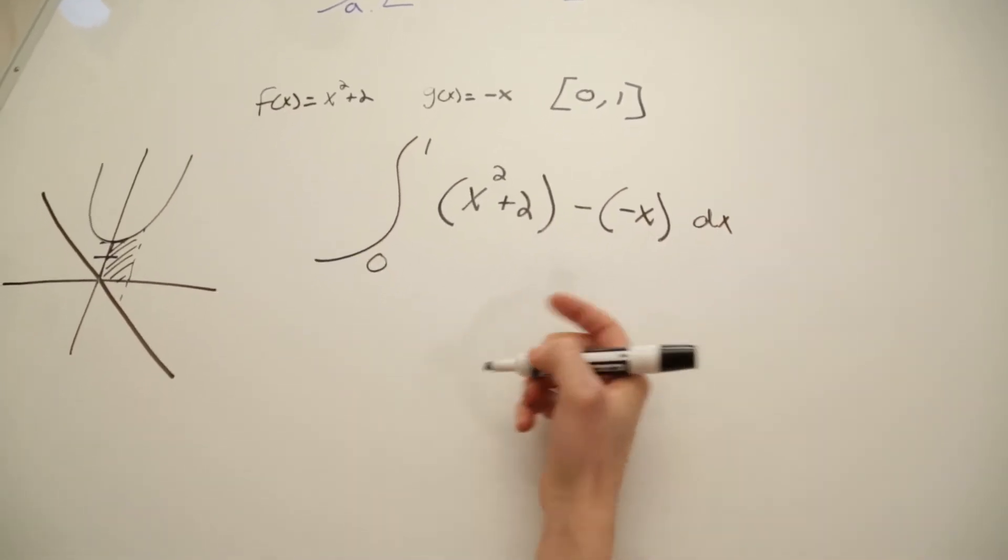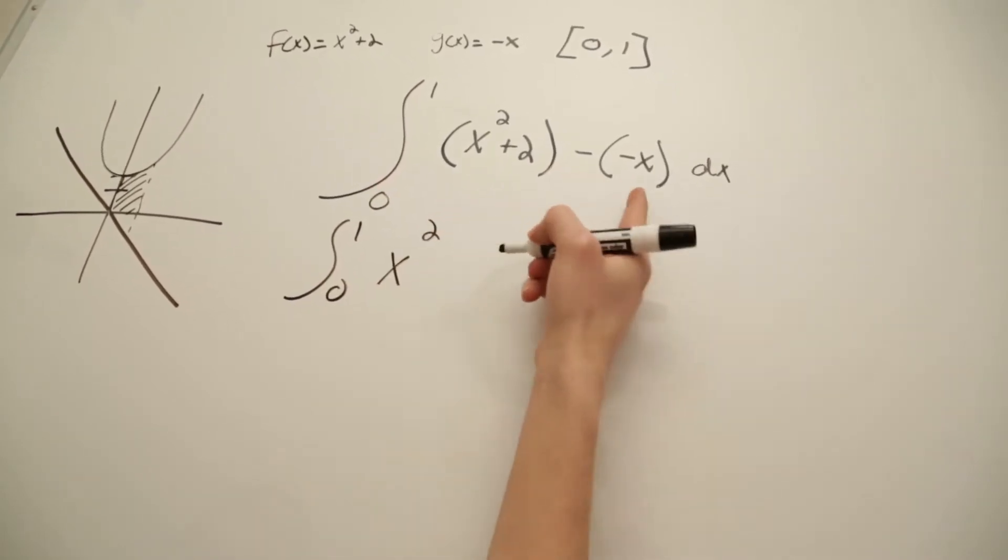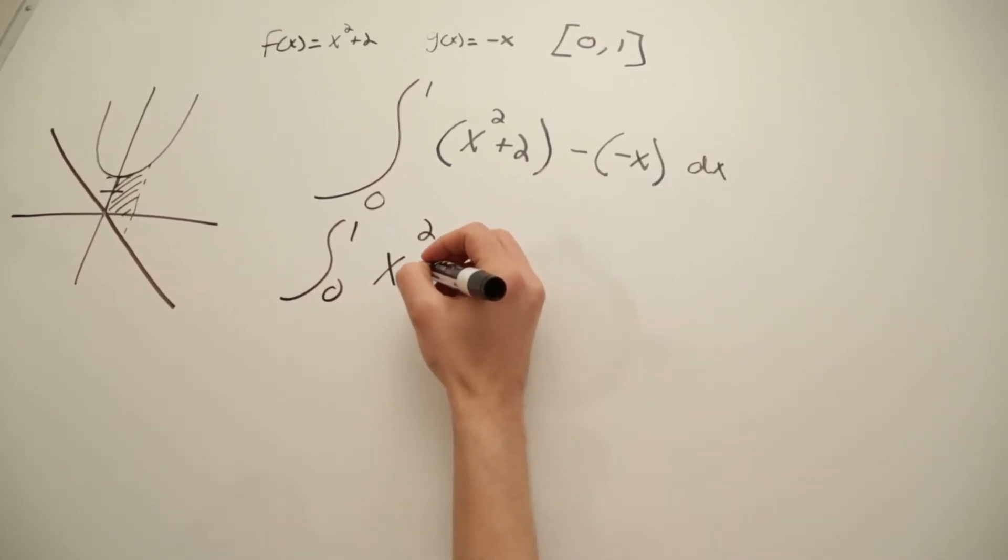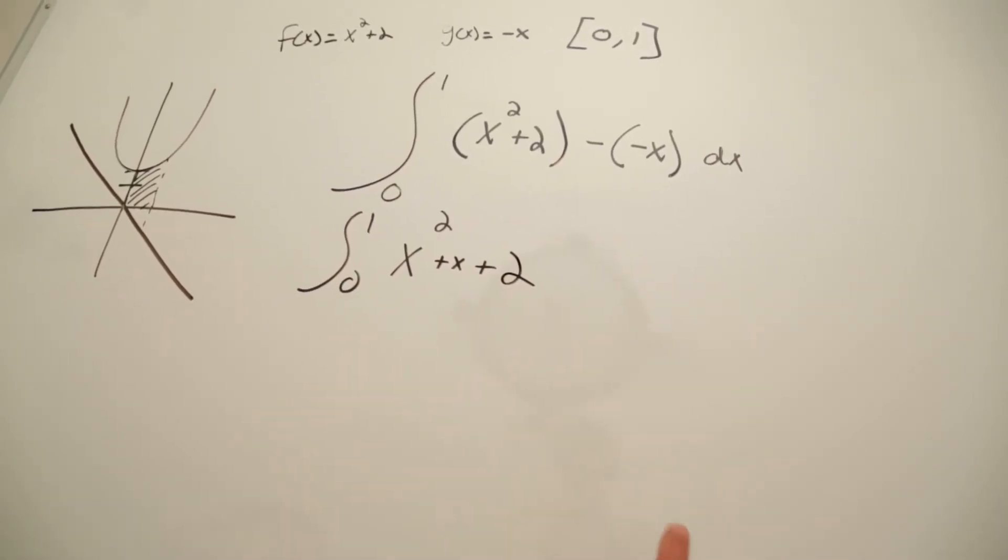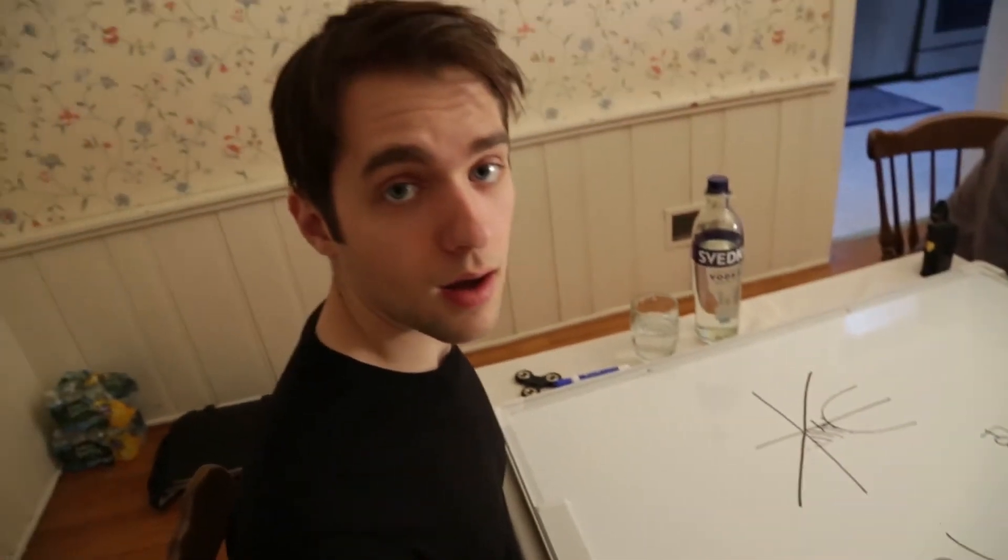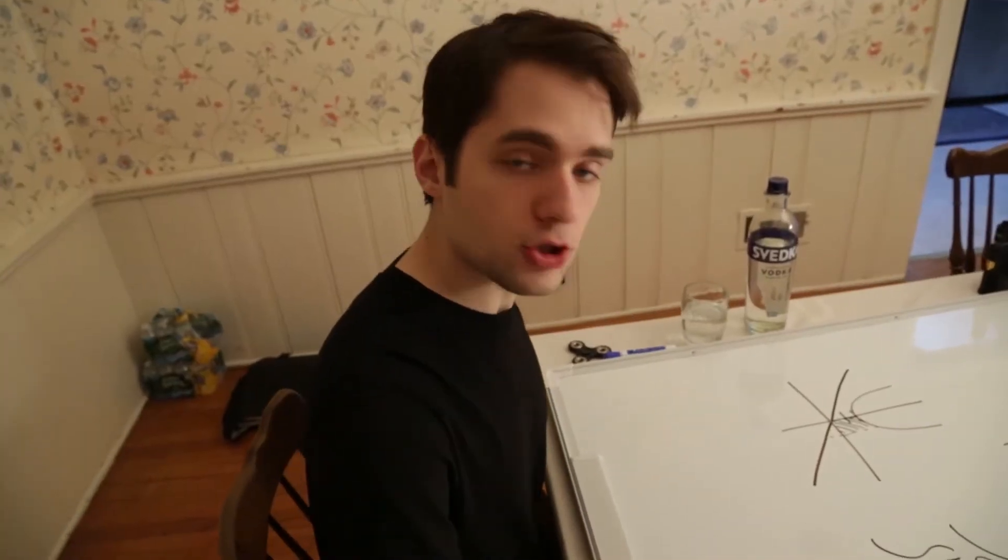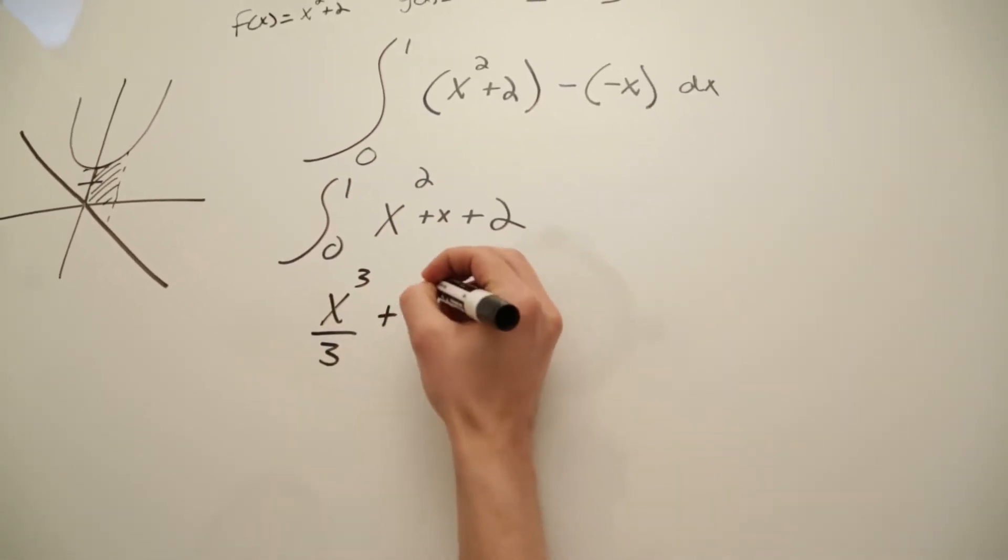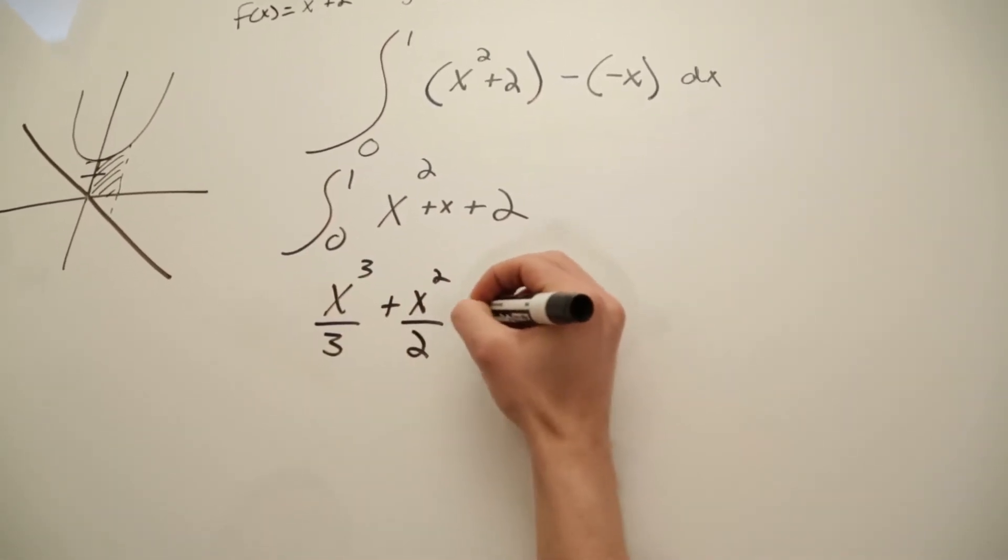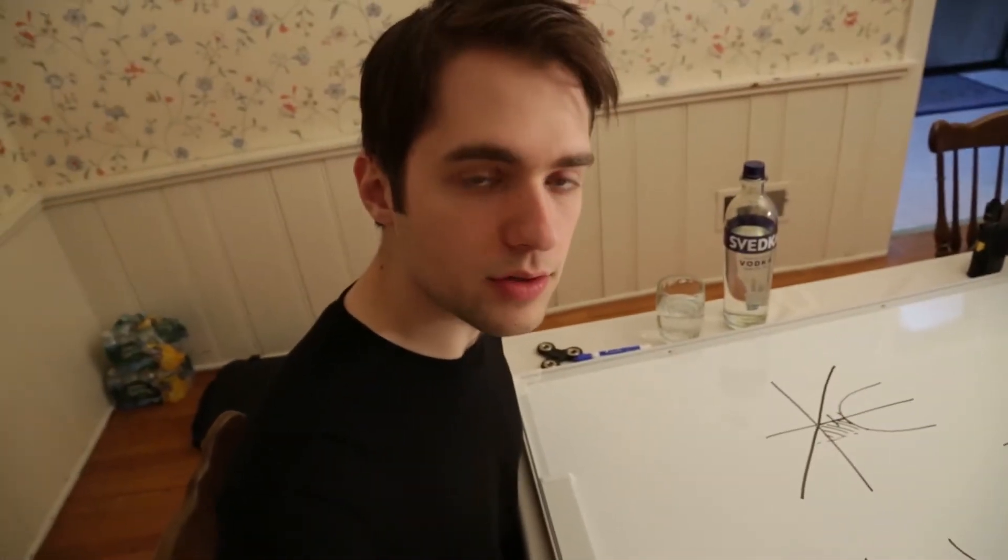So now we're just going to simplify in here from zero to one. We're going to have x squared plus x, distribute that negative, x plus two. Now we integrate. If you don't know how to integrate, you probably should go. So now you're just going to integrate. We're going to have x cubed over three plus x squared over two plus two x from zero to one. It's just a simple integration once you set it up.